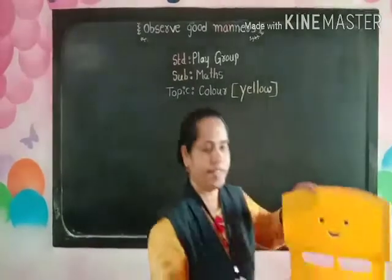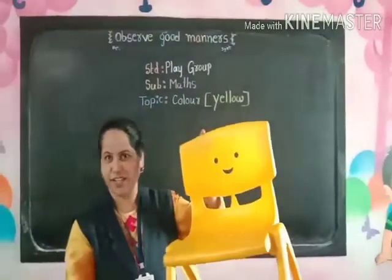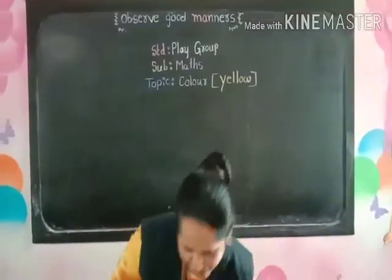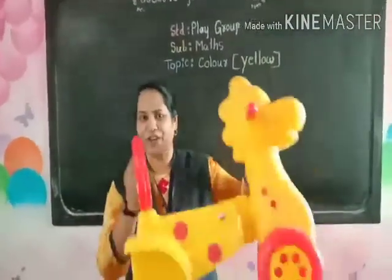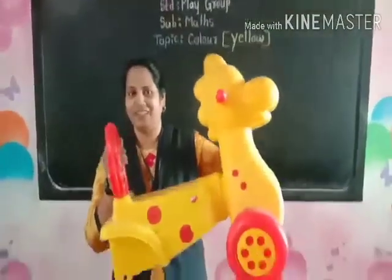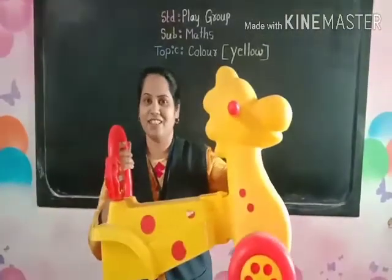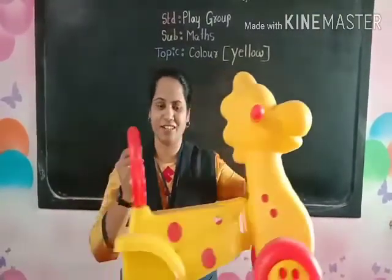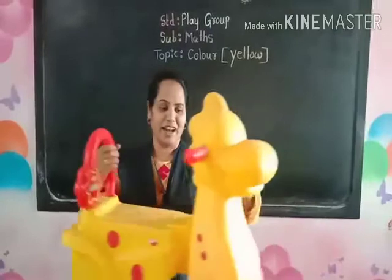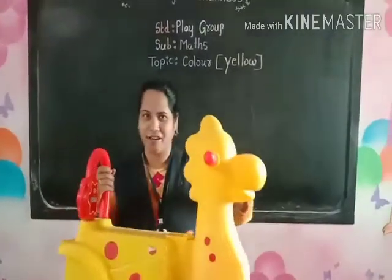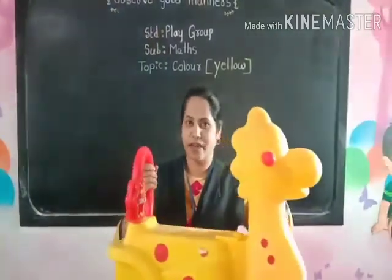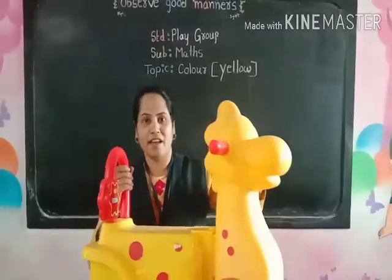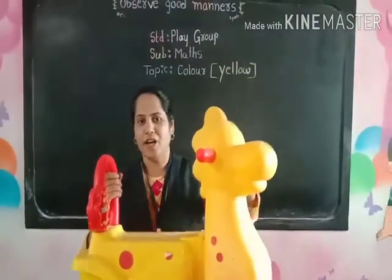And this is a tray — it is also yellow color. And look at here, your favorite — this is a yellow color vehicle. In your garden, there is a cycle. Your cycle is also yellow color.